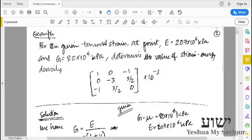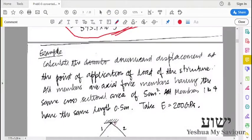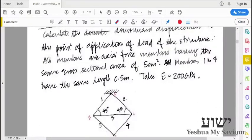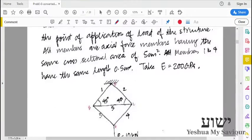Good day. Next we will see some example problems regarding energy methods. We have to calculate the downward displacement at the point of application of load of this structure. All the members have axial forces and have the same cross-section of 5 centimeter square. All members 1 to 4 have the same length of 0.5 meter. Take E = 200 GPa.